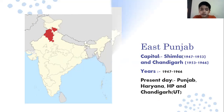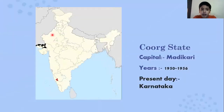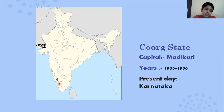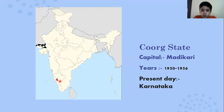Next is Coorg State. The capital was Madikeri and it existed from 1950 to 1956 — a total of six years. Present day it is in Karnataka, which you can see here on the map.